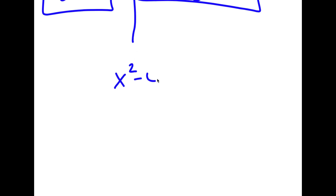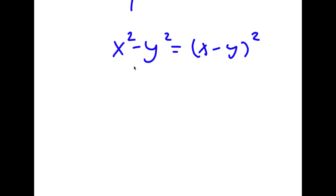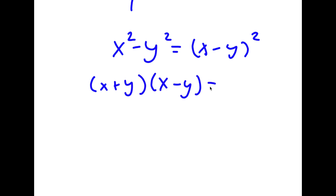Now I have another method of solving this. I have x squared minus y squared is equal to x minus y squared. I'm going to rewrite x squared minus y squared as (x plus y)(x minus y).